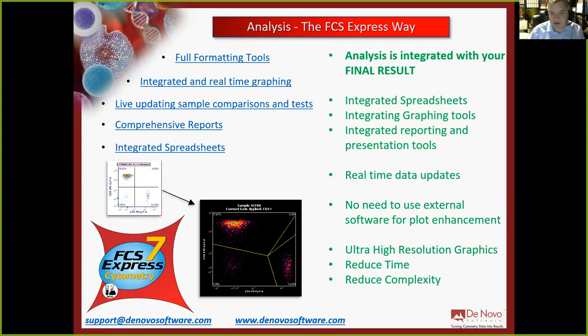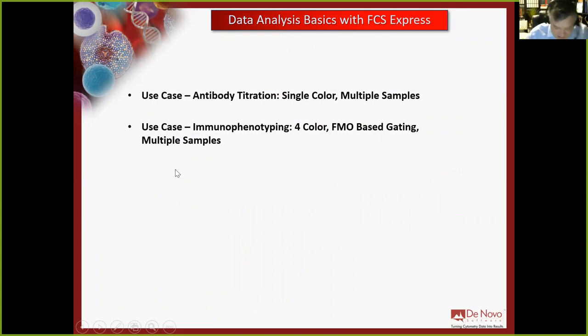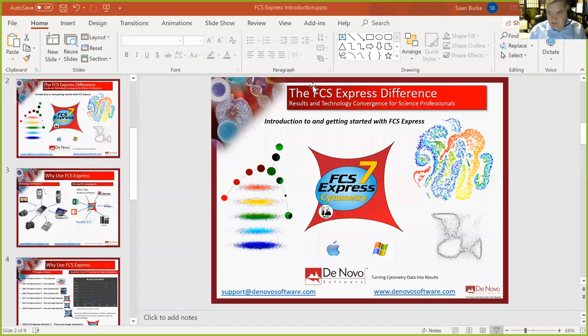We'll get through all this within about 30 to 45 minutes. The first thing we're doing is looking at an antibody titration — we'll show you how to load data, how to compare multiple data files in the same FCS Express layout, how to create gates, statistics, and charts. Now I'm going to jump over to FCS Express.